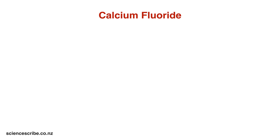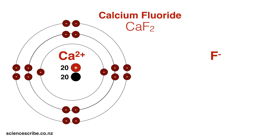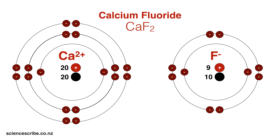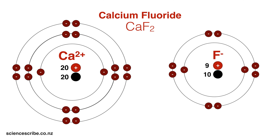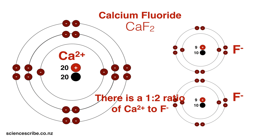Let's now look at another example with calcium fluoride. To write the ionic formula for calcium fluoride, I'd see that it's made of calcium 2+ and F- ions. I would also need two sets of fluoride ions so that all the positive and negative charges balance out and cancel to zero, making the formula CaF2. This tells us that there are two fluorides for every one calcium 2+, meaning a ratio of one Ca2+ to every two F- ions.